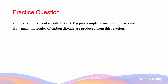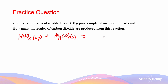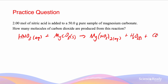In this question, 2 moles of nitric acid is added to a 50g sample of magnesium carbonate. How many molecules of carbon dioxide are produced? We need to recognise this is an acid and carbonate reaction, meaning there will be formation of carbon dioxide, salt, and water. Nitric acid has the formula HNO₃ in the aqueous state. Magnesium carbonate has the formula MgCO₃, and we produce the salt magnesium nitrate Mg(NO₃)₂, water, and CO₂ gas. We can add a 2 in front to balance the equation, giving a stoichiometric ratio of 2:1:1:1.